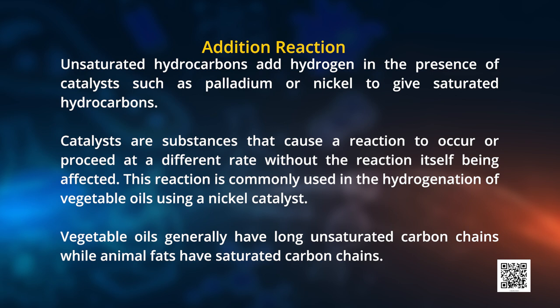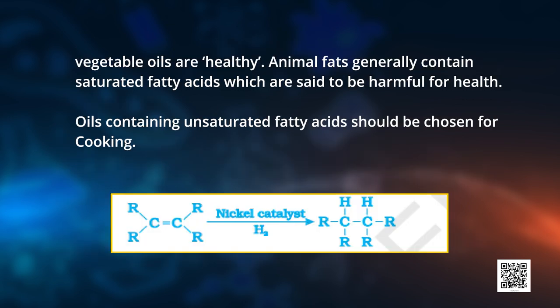This reaction is commonly used in the hydrogenation of vegetable oils using a nickel catalyst. Which type of oil should be used in cooking — saturated or unsaturated? Oils containing unsaturated fatty acids should be chosen for cooking, because vegetable oils generally have long unsaturated carbon chains while animal fats have saturated carbon chains. Vegetable oils are healthy, but animal fats generally contain saturated fatty acids which can be harmful for your health. On the screen you can see an alkene with a double bond; in the presence of a catalyst it forms an alkane. Your task is to write a balanced chemical equation.